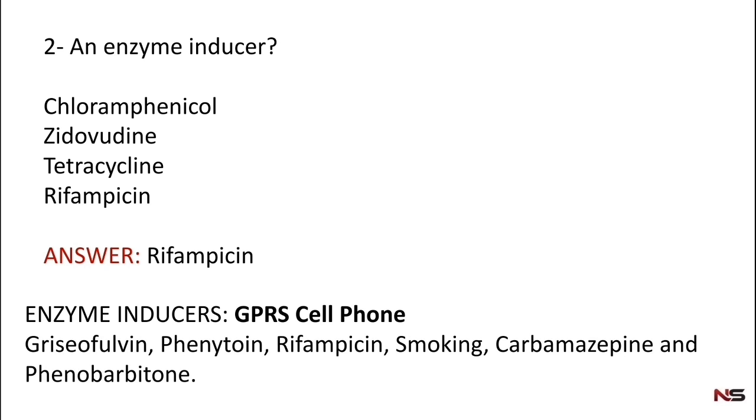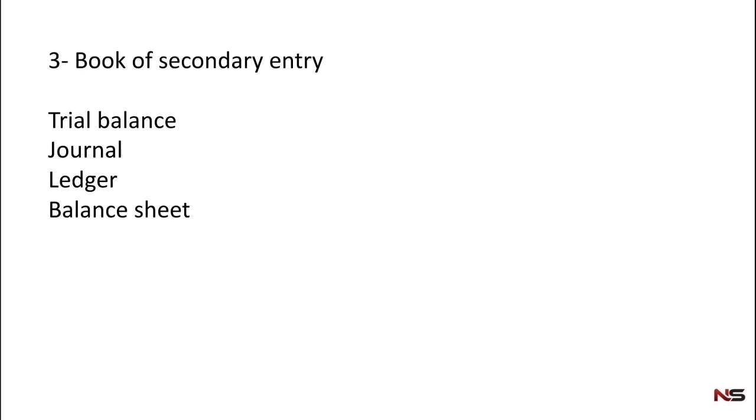Question number three: book of secondary entry. Options: trial balance, journal, ledger, balance sheet. The correct answer is ledger. Ledger is a secondary entry book.